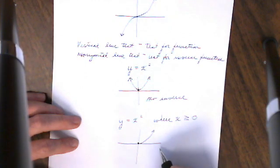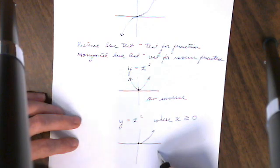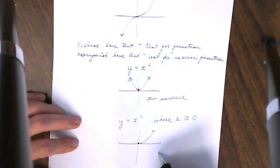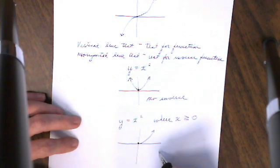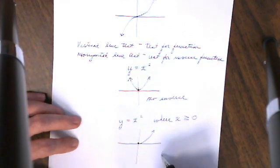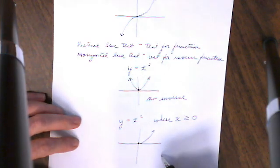We're going to see in our next video that this works out well in trigonometry. If we look at the functions sine, cosine, and tangent and limit their domains, we're also going to be able to have inverse functions in trigonometry.